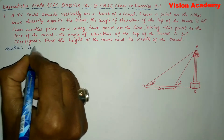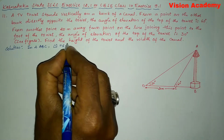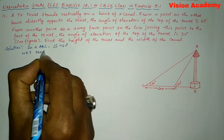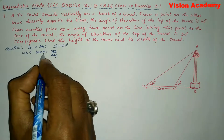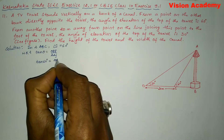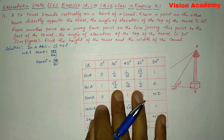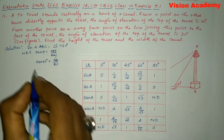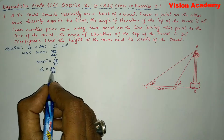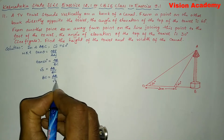In triangle ABC, angle C is equal to 60 degrees, as given. We know that tan θ = opposite/adjacent. So here θ is 60 degrees, and we write tan 60° = AB/BC. From the trigonometric table, tan 60° = √3. So √3 = AB/BC, which gives us BC = AB/√3.